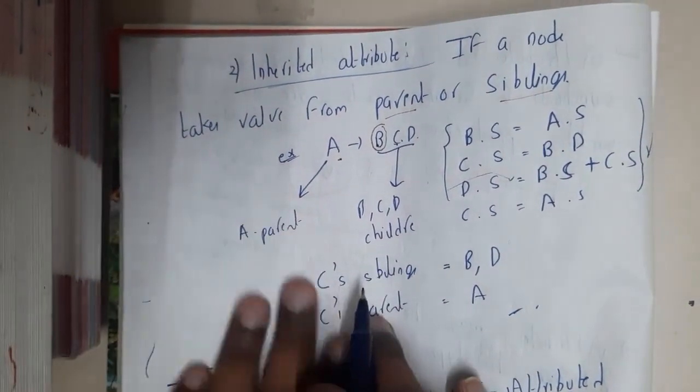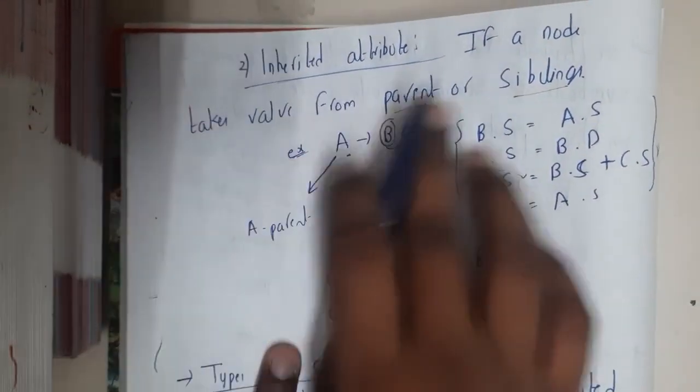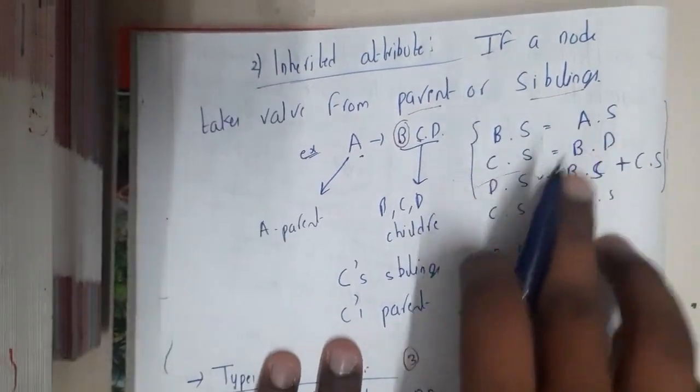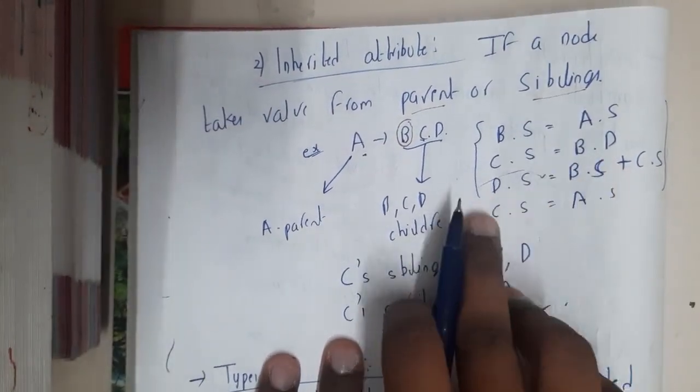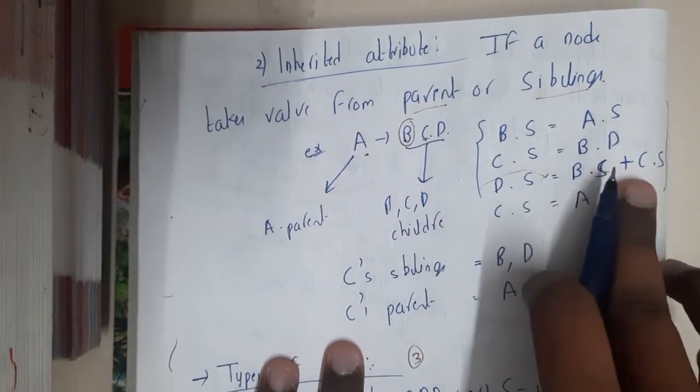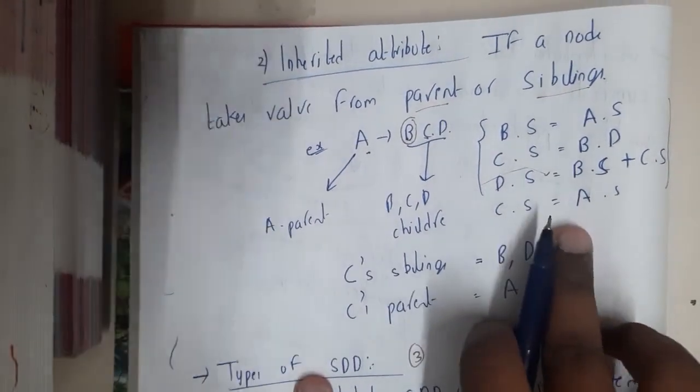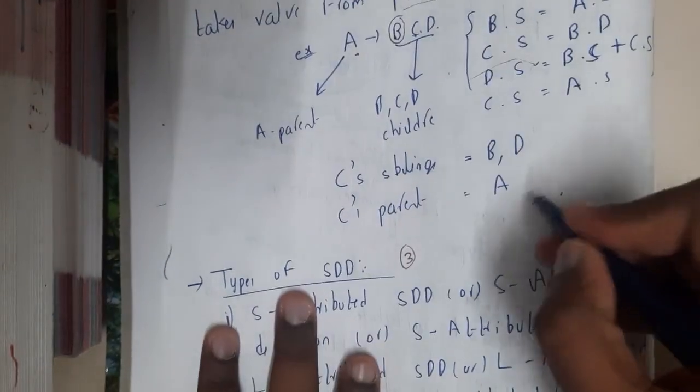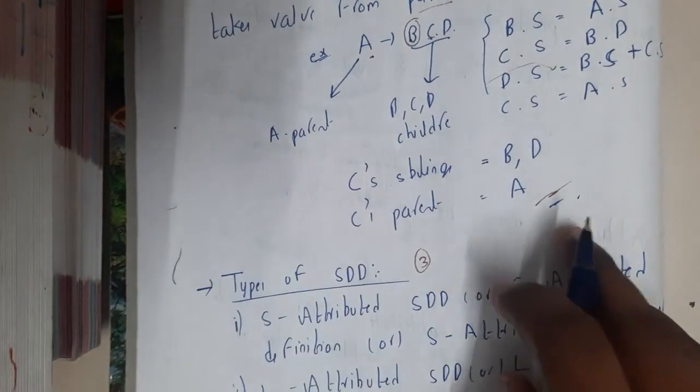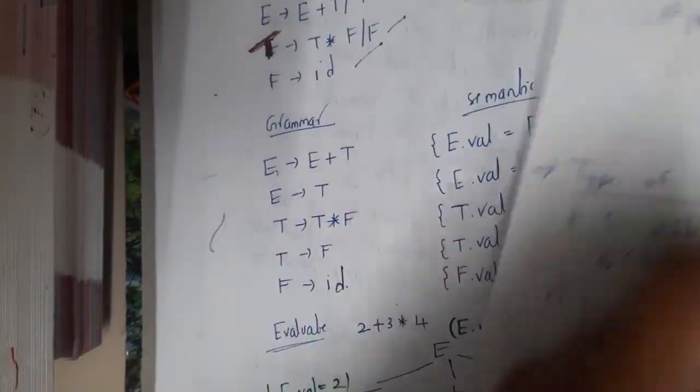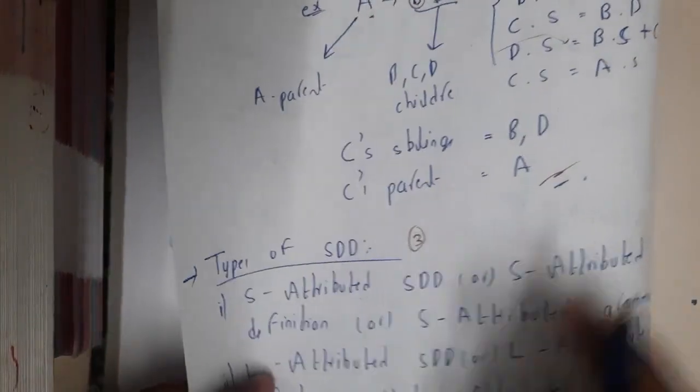If a node takes a value from its parent or sibling, for example: B.s = A.s, C.s = B.s, D.s = B.s + C.s, or C.s = A.s. So basically, from parents or siblings. Whereas in synthesized, only from its children is called synthesized.